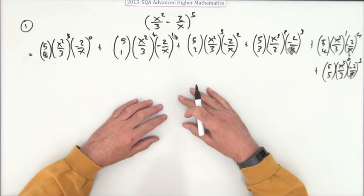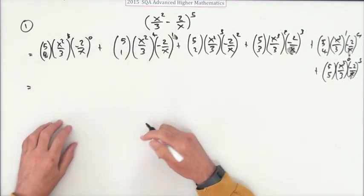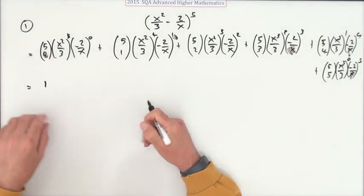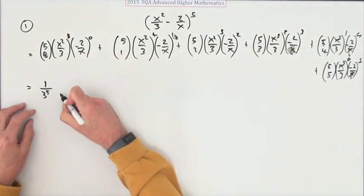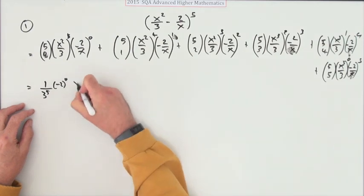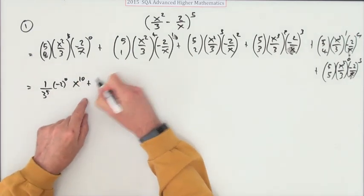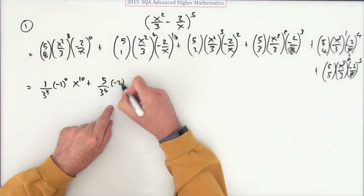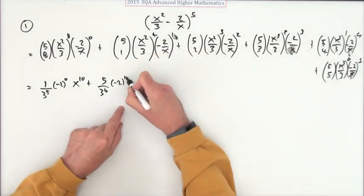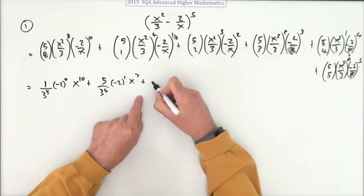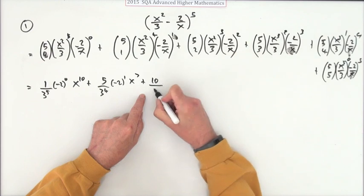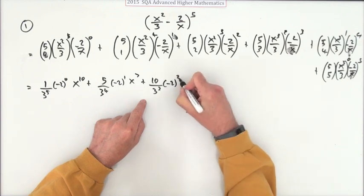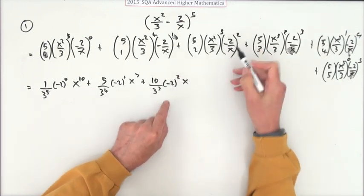Now I have to write out what it all means. We're better off taking the coefficients to the front. So that's one times x squared over three to the power of five, and negative two to the zero — that's power ten. First term done. Five times x squared over three to the power of four, and negative two to the power of one — that'll be eight take away one, which is seven. Now it goes to ten times x squared over three to the power of three. That's power four: six take away two.